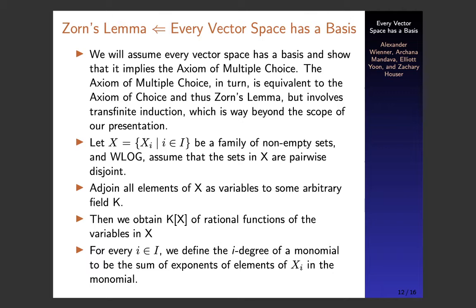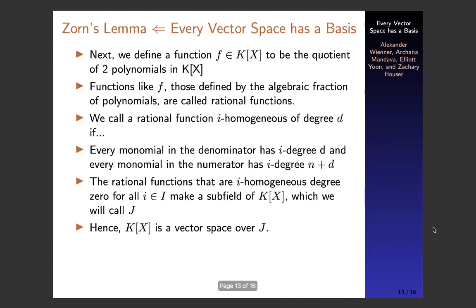First, we let X be a family of non-empty sets and, without loss of generality, assume the sets in X are pairwise disjoint. We then join all the elements of X as variables to some arbitrary field K. We can obtain K(X), a field of rational functions of the variables in X — and I should note there is a slight typo on this slide: K should be in parentheses, not brackets, because we are dealing with fields. For every i in I, we define the i-degree of a monomial to be the sum of exponents of elements of Xᵢ in the monomial.